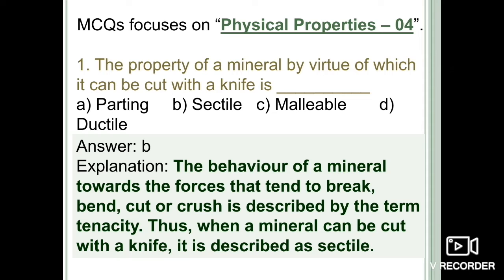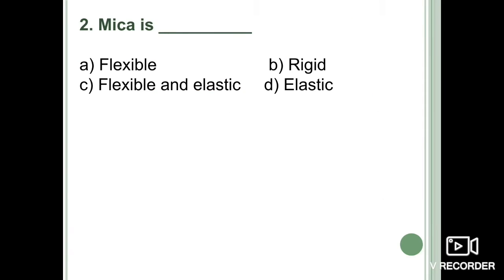The next question is about mica: is it flexible, rigid, flexible and elastic, or only elastic? Some minerals are flexible in nature, some are rigid, some are both flexible and elastic, and some are only elastic. These are fundamental properties of minerals, and this question deals specifically with mica.